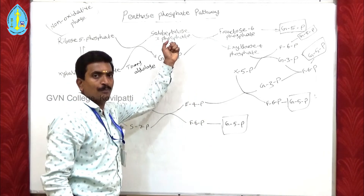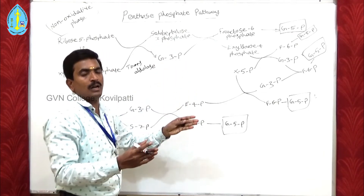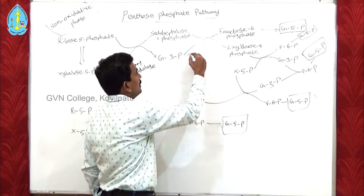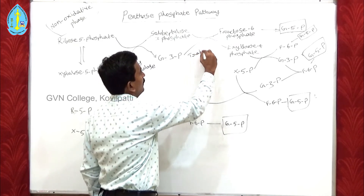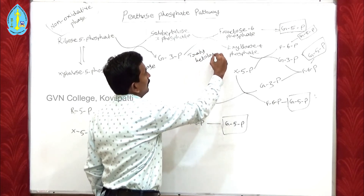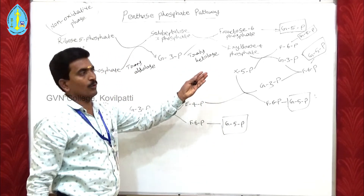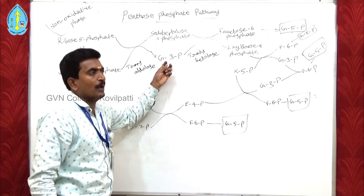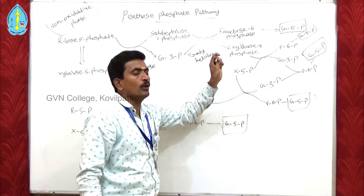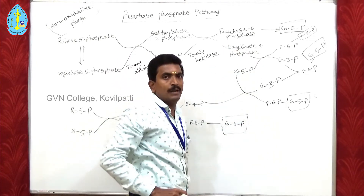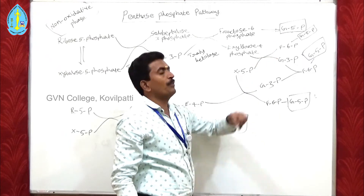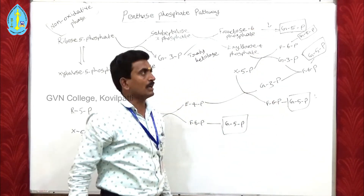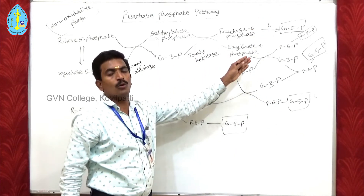Then sedoheptulose 7-phosphate and glyceraldehyde 3-phosphate both come together and break down to form fructose 6-phosphate and erythrose 4-phosphate, using the enzyme transaldolase. Here, one keto group is transferred from one compound to another. The enzyme transketolase converts sedoheptulose 7-phosphate and glyceraldehyde 3-phosphate into fructose 6-phosphate and erythrose 4-phosphate. The fructose 6-phosphate is then converted into glucose 6-phosphate with the help of the enzyme phosphoglucoisomerase.